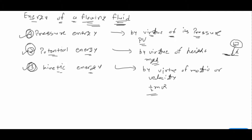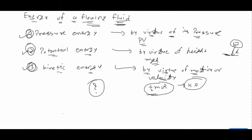The third one is kinetic energy. Since the fluid is flowing, by virtue of its motion or velocity we have kinetic energy. We all know it's half mv squared. This kind of energy is known as kinetic energy.